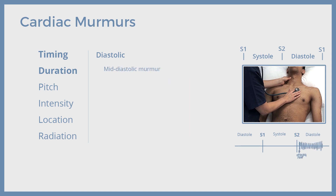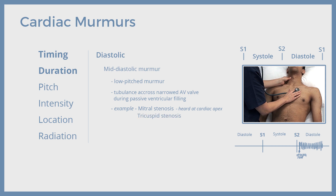The second diastolic murmur is a mid-diastolic murmur. This murmur is low-pitched, generated by turbulent blood flow across a narrowed atrioventricular valve during passive ventricular filling. A typical example is mitral stenosis, where the mid-diastolic murmur is heard at the apex. Rare tricuspid stenosis also produces a mid-diastolic murmur, but it is heard on the left sternal border.